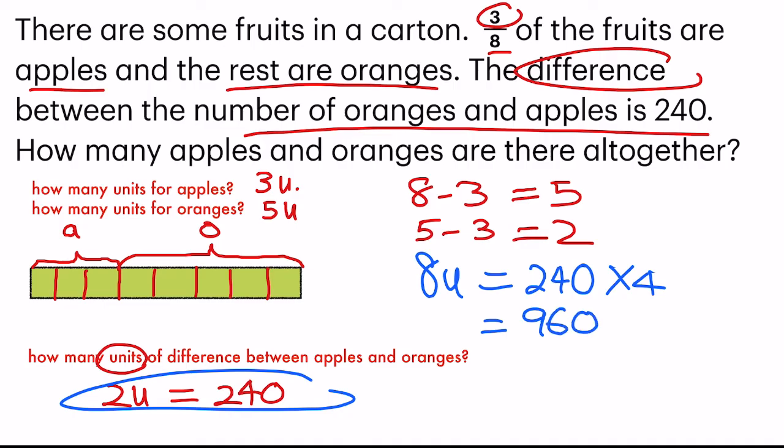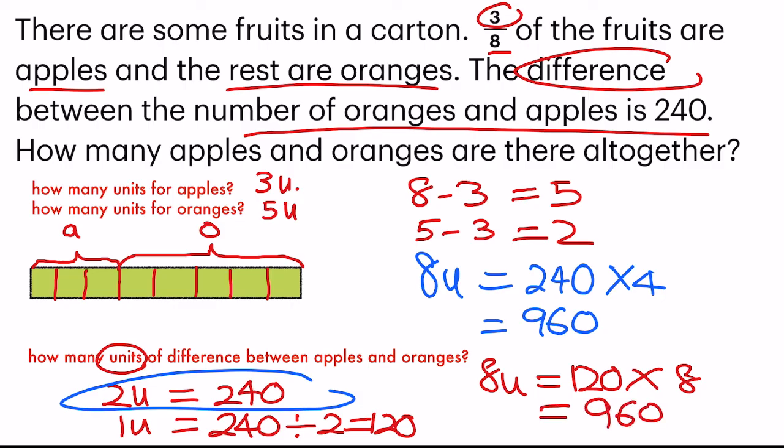Alternatively, you could also just find 1 unit, which I'll take 240 divided by 2, I get 120. And thereafter, I'll just take 120 times 8. I will also get 960.